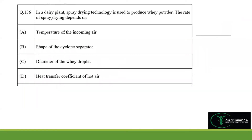Moving to question 136: in a dairy plant spray drying technology is used to produce whey powder. In a spray dryer, an atomizer is used to produce droplets of the liquid — here the whey liquid is atomized and converted into small droplets. Air passes from beneath and evaporates all the water present, converting droplets into powder form.